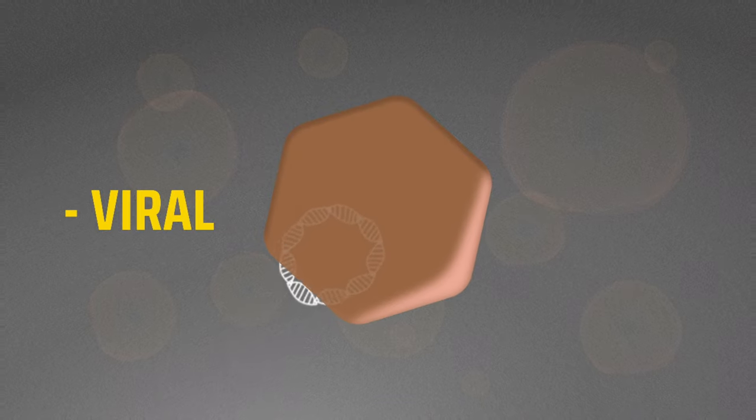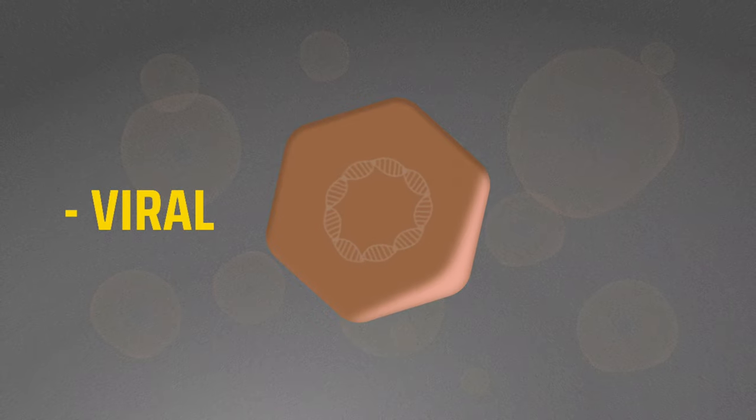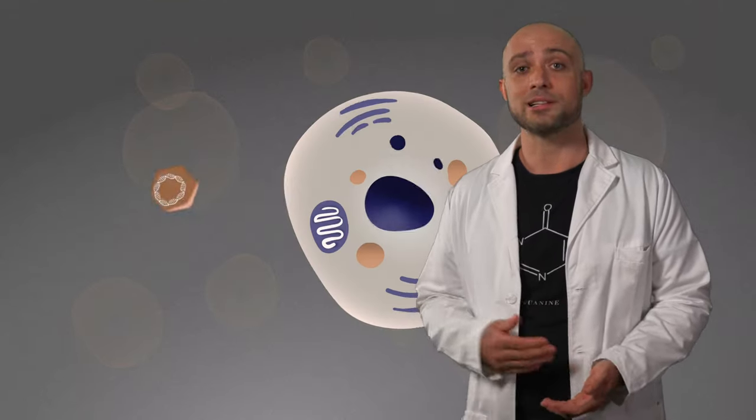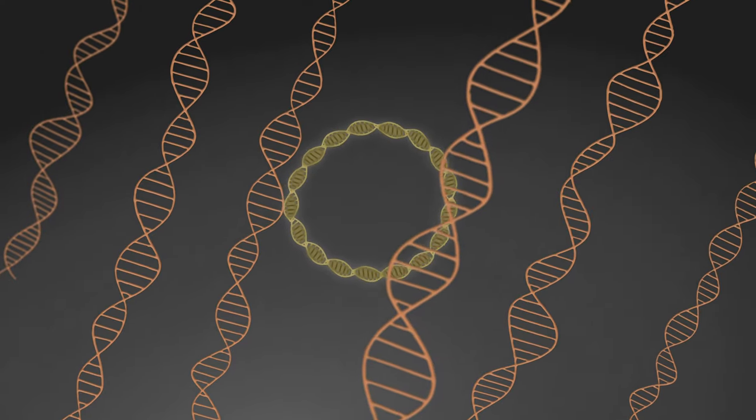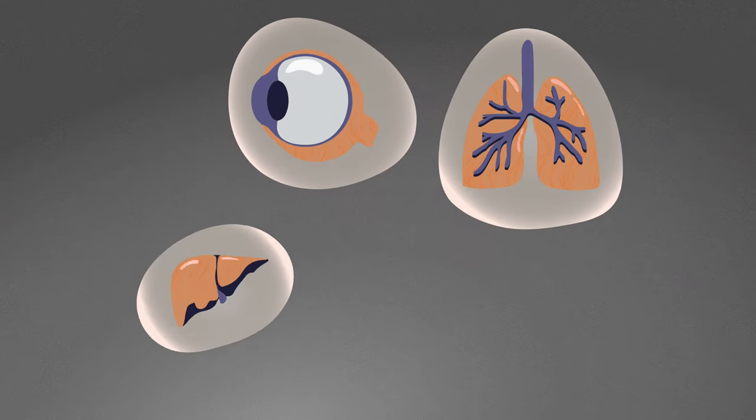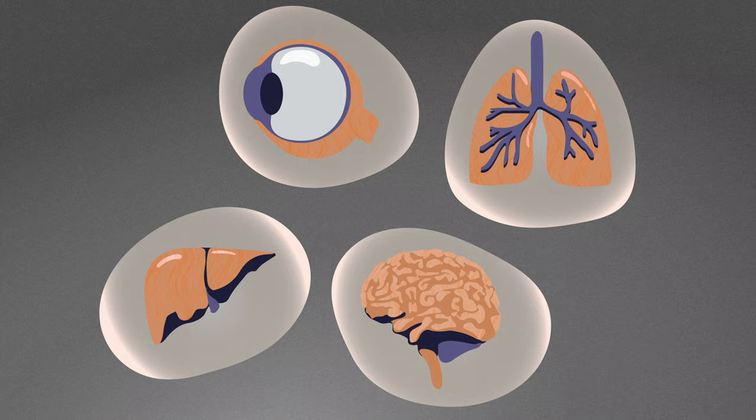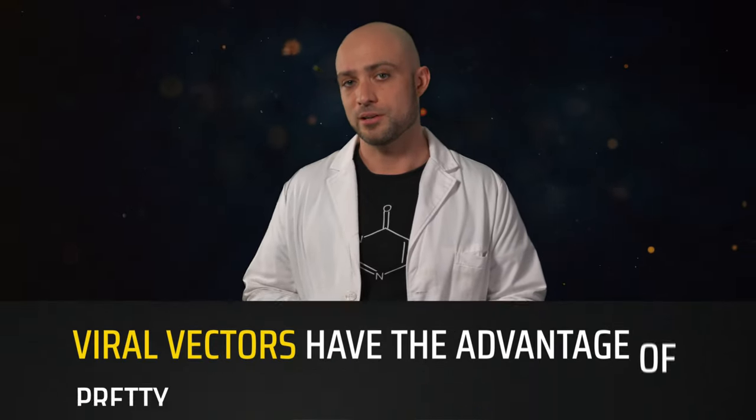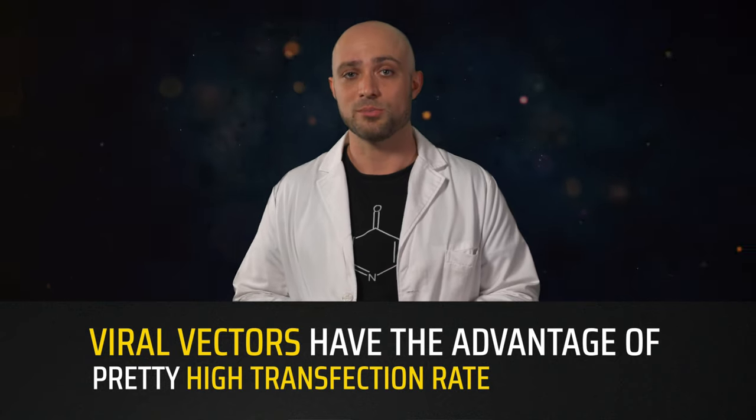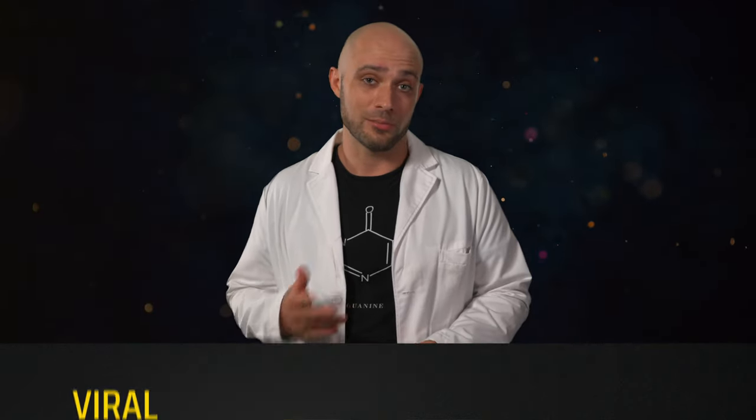A viral vector is the most well-known, and what most people think of when they hear gene therapies. Viruses normally work by injecting their own DNA into cells, so we can hijack that mechanism by taking a harmless virus, removing most of its DNA payload, and replacing it with the plasmid that we want for our gene therapy. Then the virus goes into your body and delivers the gene therapy to whatever cell it touches. Viral vectors have the advantage of a pretty high transfection efficiency, but it also has plenty of problems.